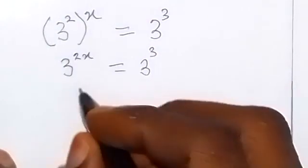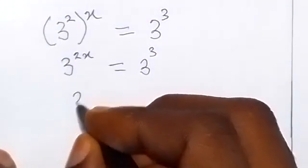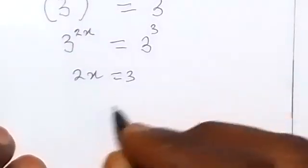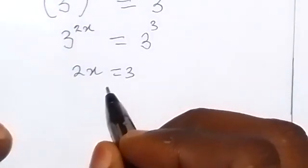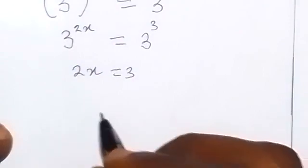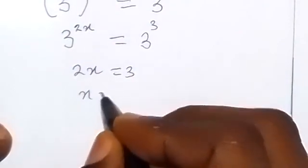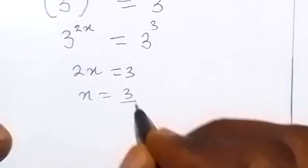And we have 2x equals to 3. Then since we are finding x, we can divide both sides by the coefficient of x which is 2. That's x equals to 3 over 2.